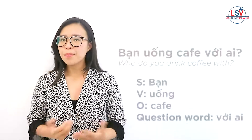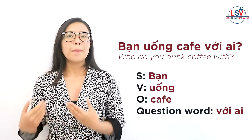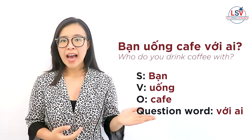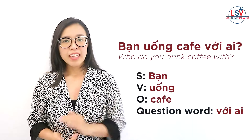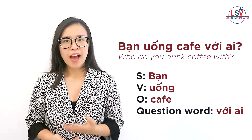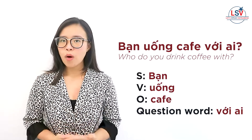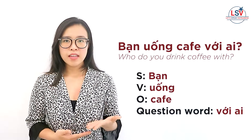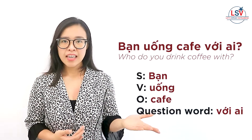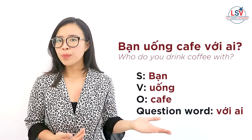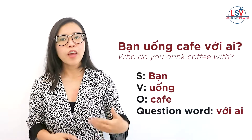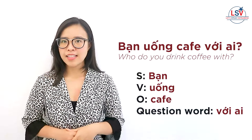If there is an object, for example: bạn uống cà phê với ai? In this case, bạn is the subject, uống is the verb, cà phê is the object, and với ai — meaning 'with whom' — is the question word. So the question word goes after the object in this case.